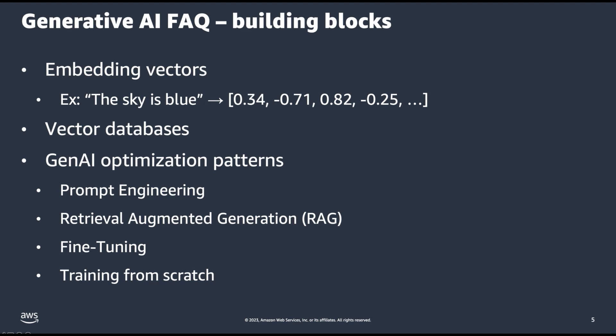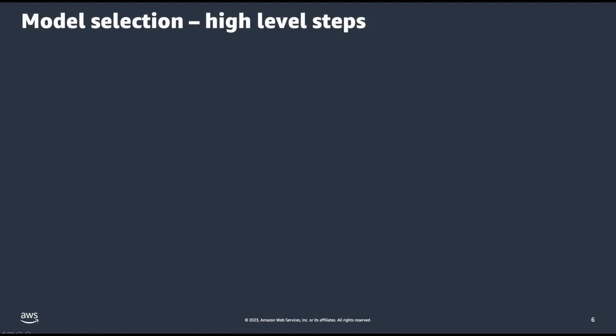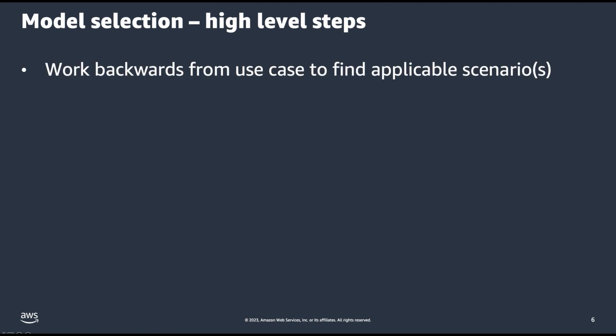Now that we have covered some building blocks, we will cover at a high level the recommended steps to select the right model for your use case. Large language models do have some overlap, but many large language models are purpose-built to be good at tasks such as summarization, language translation, image creation, etc. So be sure to work backwards from your use case to filter for the appropriate large language models.